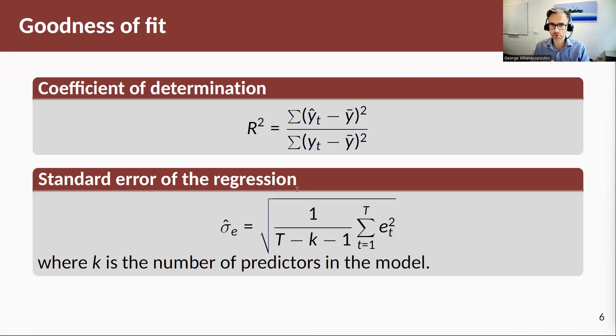Two regularly used measures: the coefficient of determination, R-squared, is defined by the ratio between the variance of our fitted values and the variance of the data. The maximum of this will be one. If the variance of our fitted values is identical to the variance of the data, that means we fitted the data very well. It's the variance accounted for by the predictors.